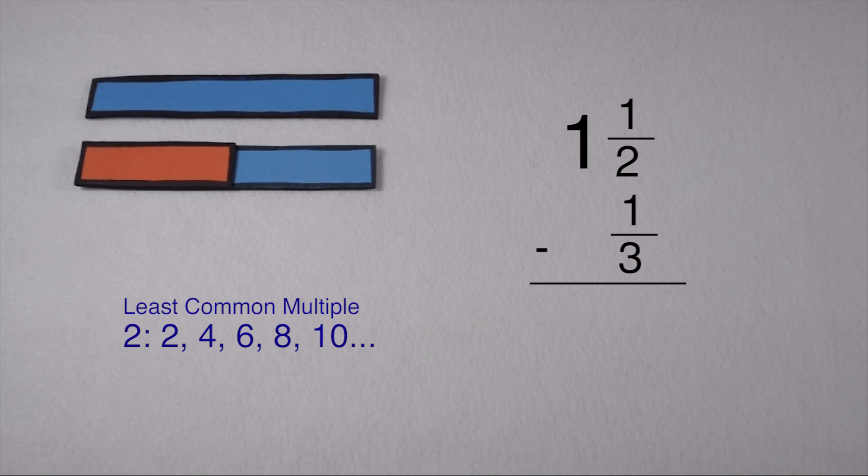Multiples of 2 include 2, 4, 6, 8, 10, and so on. Multiples of 3 include 3, 6, 9, 12, 15, and so on. The first one they have in common is 6, so we're going to use this as our common denominator.